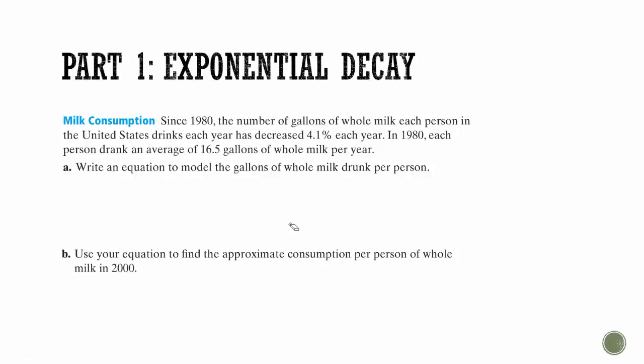So let's try this one. Since 1980, the number of gallons of whole milk each person consumed in the United States each year has decreased by 4.1%. In 1980, each person drank an average of 16.5 gallons of whole milk. Write an equation to model the gallons drunk per person. So we have our equation, and we know that we started with 16.5. Now, the decay factor we have to think about.